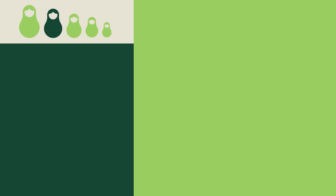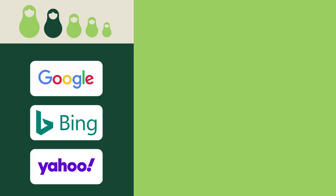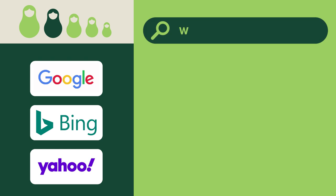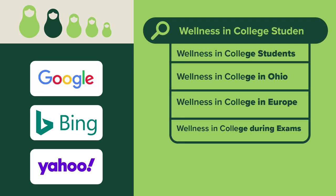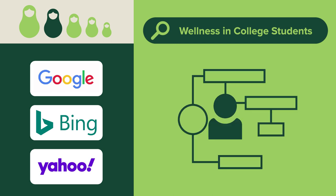Search engines like Google, Bing, or Yahoo are used to broadly search the Internet. They will try to anticipate what you want by using past search history, location, and profile information.